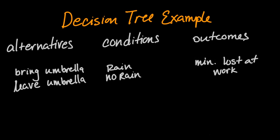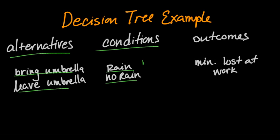A very simple decision tree: that of bringing an umbrella to work. The alternatives are bring an umbrella or leave the umbrella at home. The conditions might be that it will rain or not rain. If it rains, we might be concerned with whether it rains in the morning, the evening, or all day.